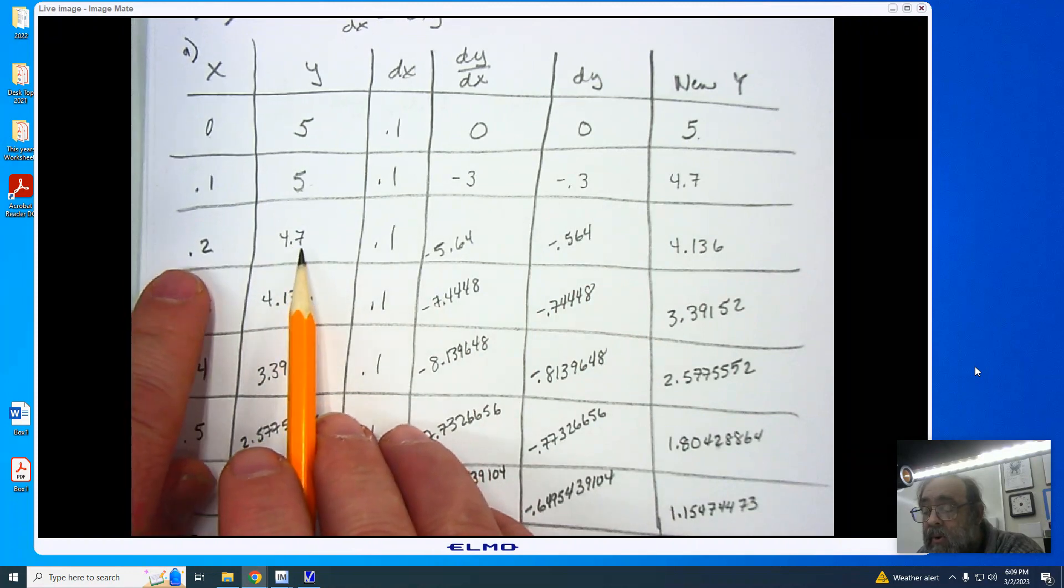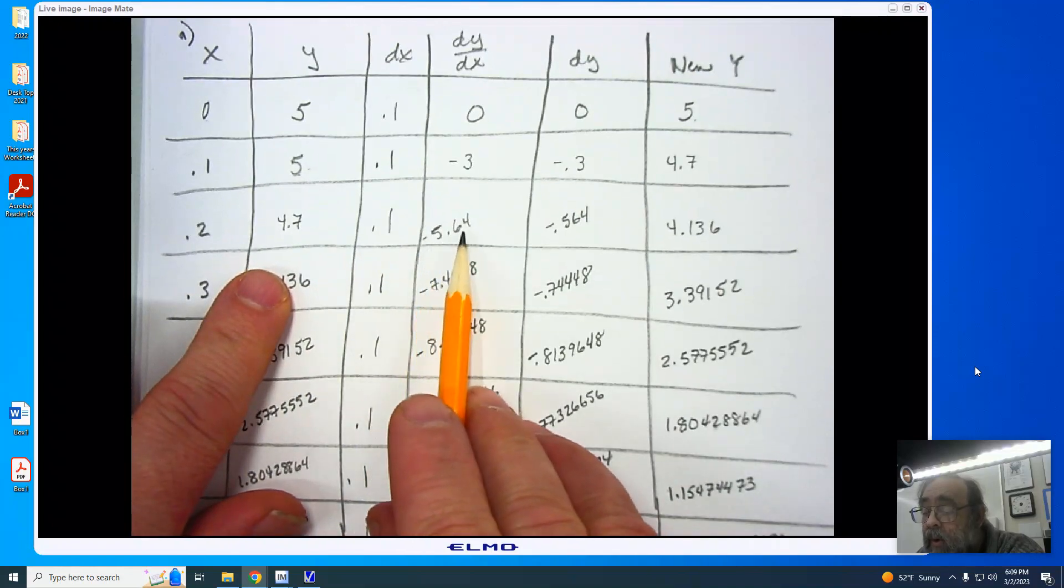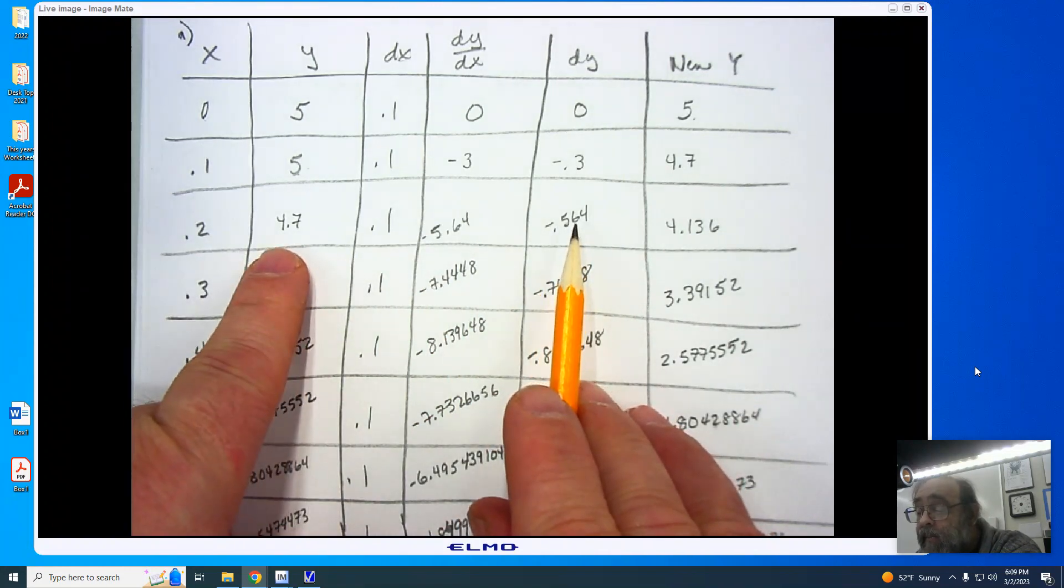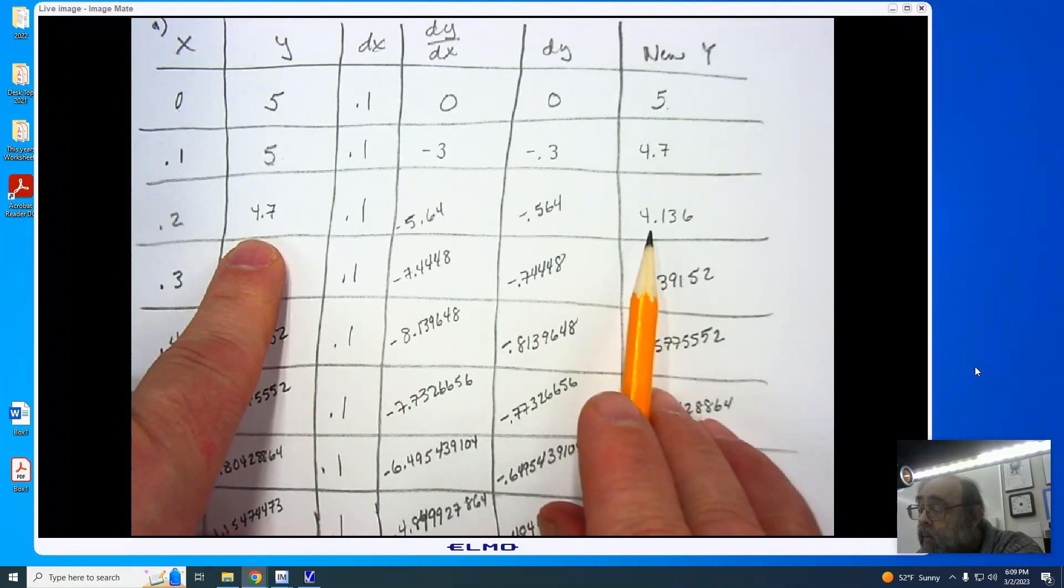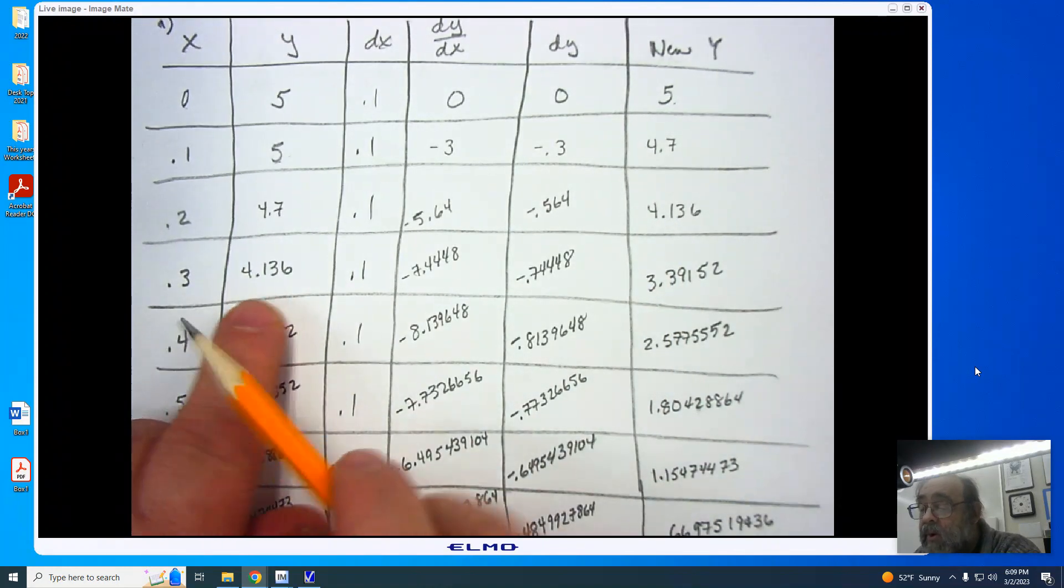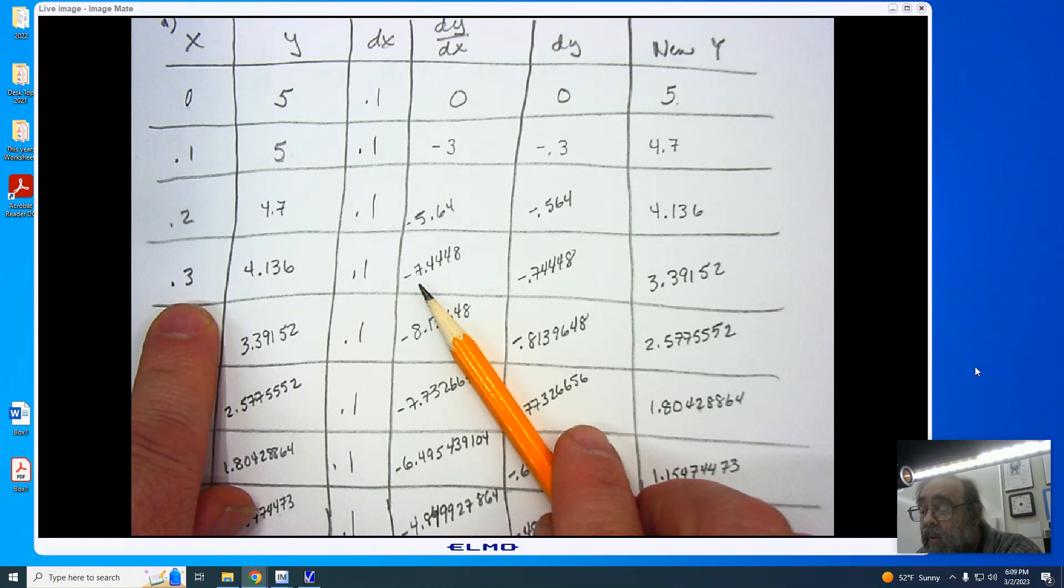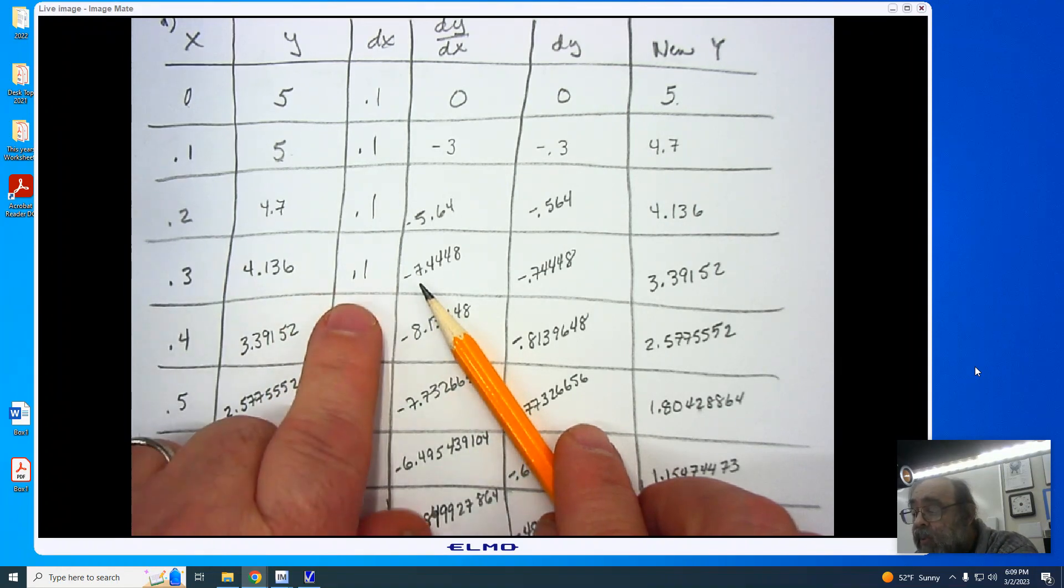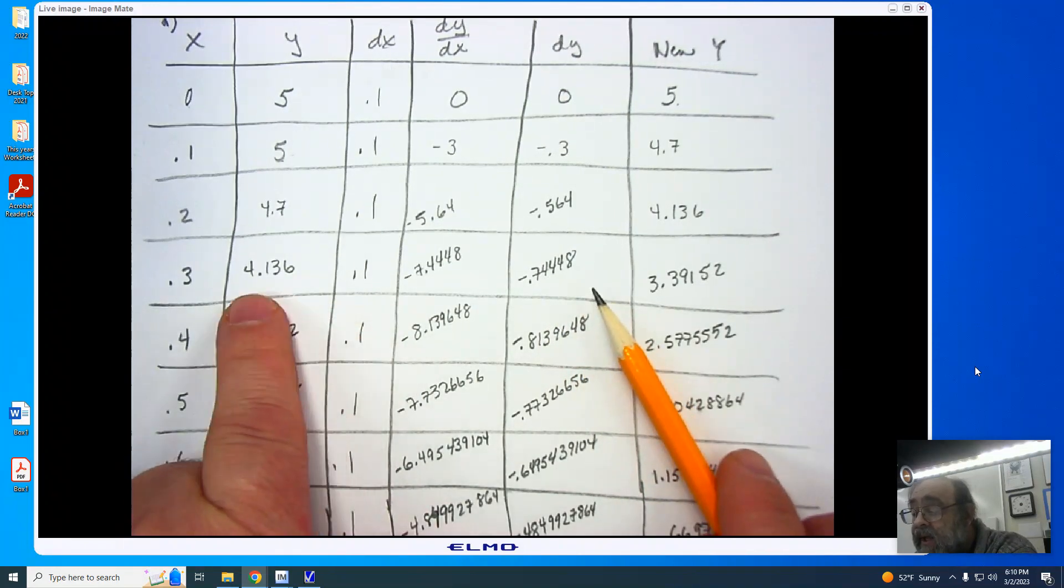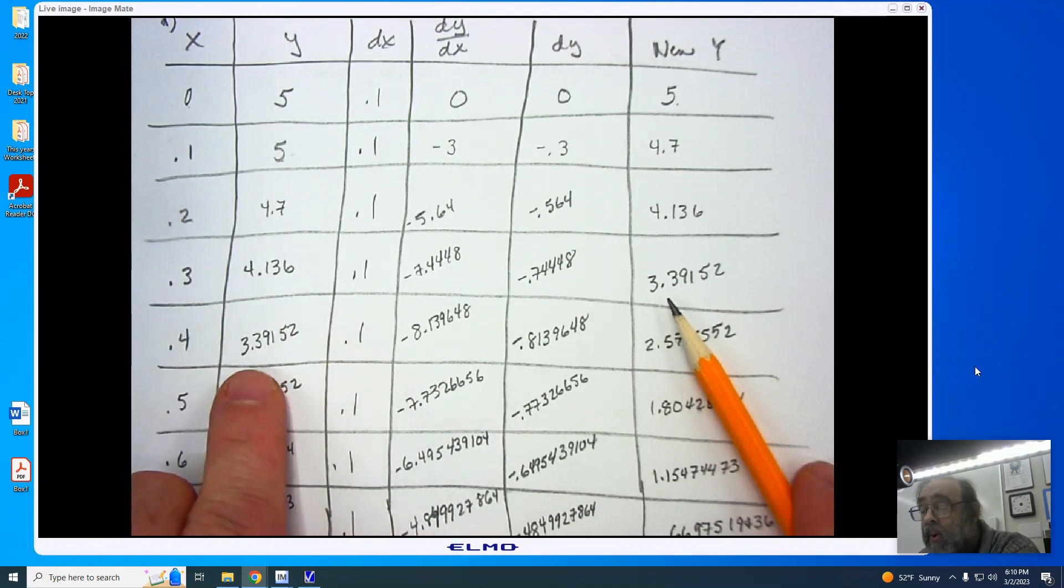We now take 0.2 multiplied by 4.7, multiply by negative 6, and it gives us negative 5.64. Multiplying by the 0.1 gives us negative 0.564, which we add to 4.7 and we get 4.136. I now put that 4.136 under y. I now once again multiply 0.3 times 4.136 times negative 6, and I get negative 7.4448. Multiplying by 0.1 gives me negative 0.74448, which I now add to the 4.136, and I get 3.39152, which I now put under y.